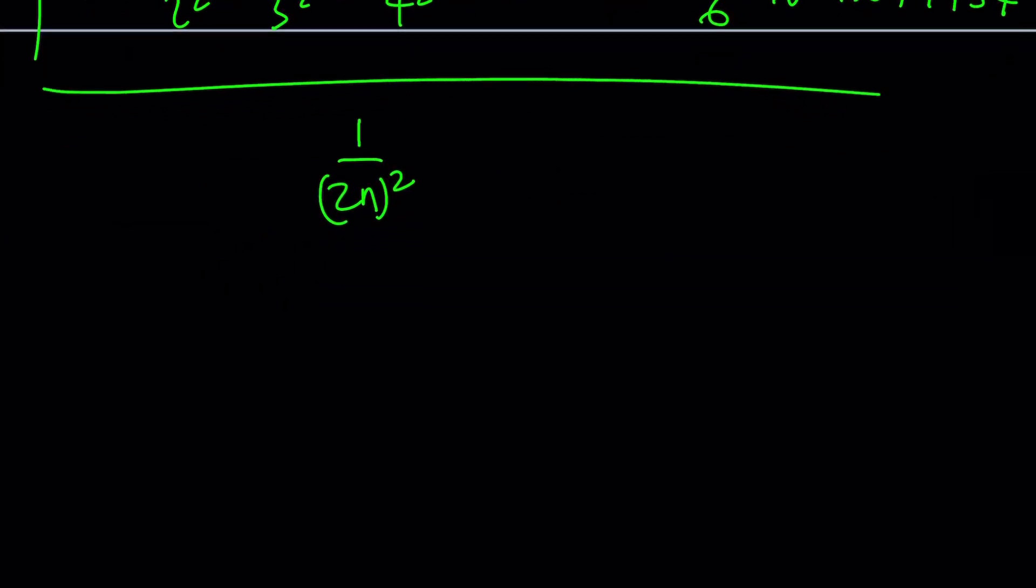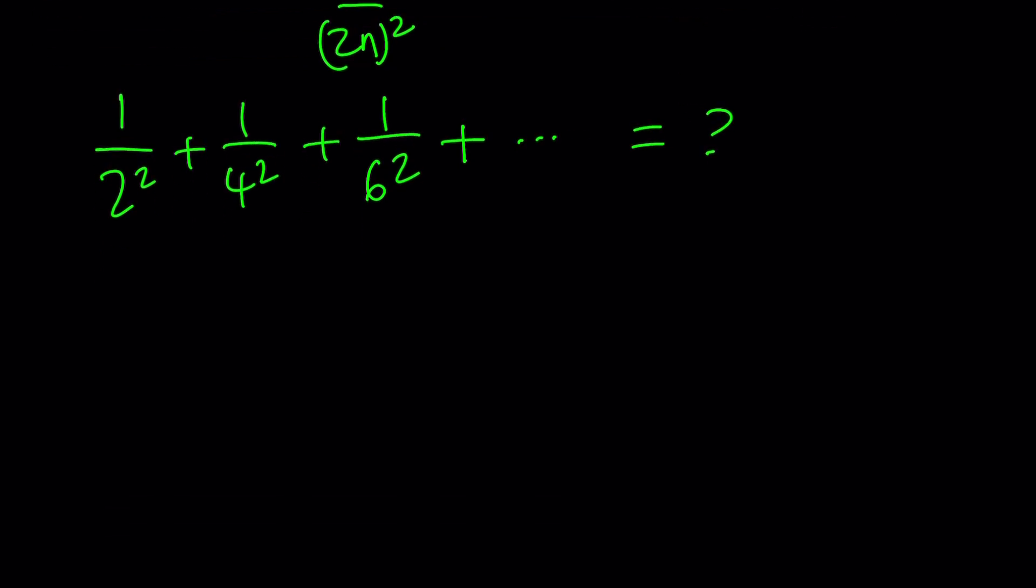To get rid of the evens, we need to find the sum of the evens: 1/2² + 1/4² + 1/6² and so on to infinity, including only the reciprocals of even squares. To do this, we're going to use a little bit of algebra.